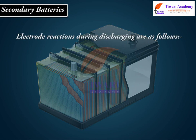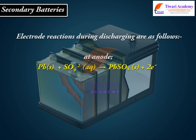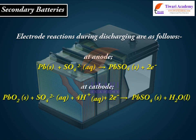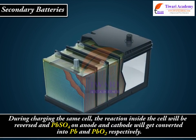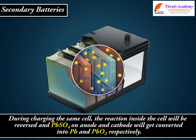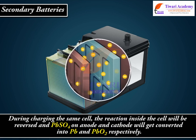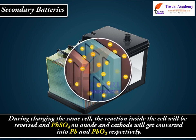Electrode reactions during discharging are as follows. At the anode: Pb(s) plus SO₄²⁻(aq) gives PbSO₄(s) plus 2e⁻. At the cathode: PbO₂(s) plus SO₄²⁻(aq) plus 4H⁺(aq) plus 2e⁻ gives PbSO₄(s) plus H₂O(l). During charging the same cell, the reactions inside the cell are reversed and PbSO₄ on the anode and cathode gets converted into Pb and PbO₂ respectively.